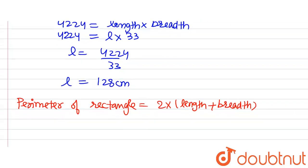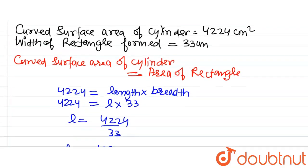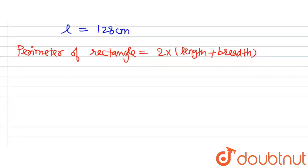So putting in the values of length and breadth. Length is 128 cm and breadth is 33 cm. So let's put in. We will get the perimeter as perimeter = 2 × (128 + 33).